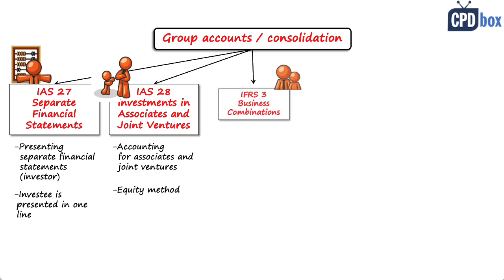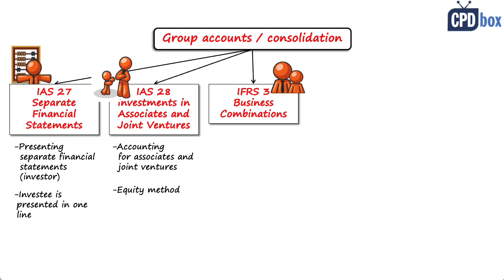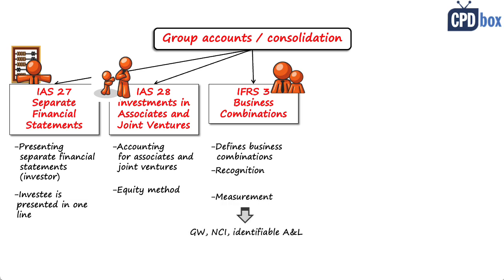The third standard is IFRS 3, Business Combinations. This one is really important because it defines what a business combination is and how we shall identify one. It also sets the recognition and measurement principles of how the acquirer shall treat goodwill, non-controlling interest, and identifiable assets and liabilities acquired in a business combination. So IFRS 3 does not describe the consolidation procedures, but it defines the basics for consolidation, like goodwill and non-controlling interest.